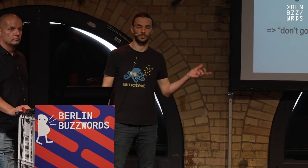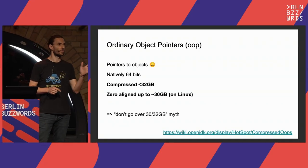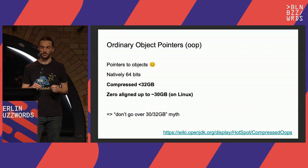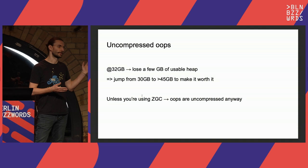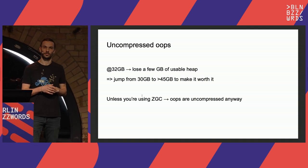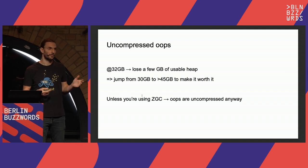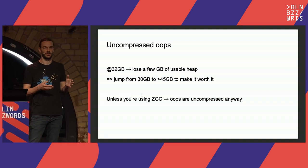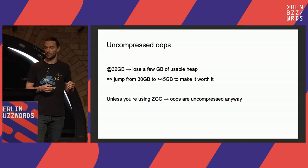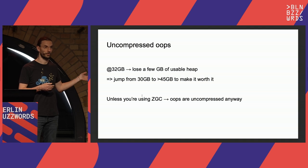For large heaps, pointers are normally 64-bit, but the JVM compresses them to 32-bit if the heap is up to 32GB. Between about 30GB and 32GB, pointers are still compressed but there's CPU overhead in computing addresses — that's where the 'don't go over 30GB' advice comes from. In practice, at 32GB you lose a few gigabytes of heap. To feel the benefit you'd need to go to about 45GB or higher. If you use ZGC, none of this matters because all pointers are 64-bit.